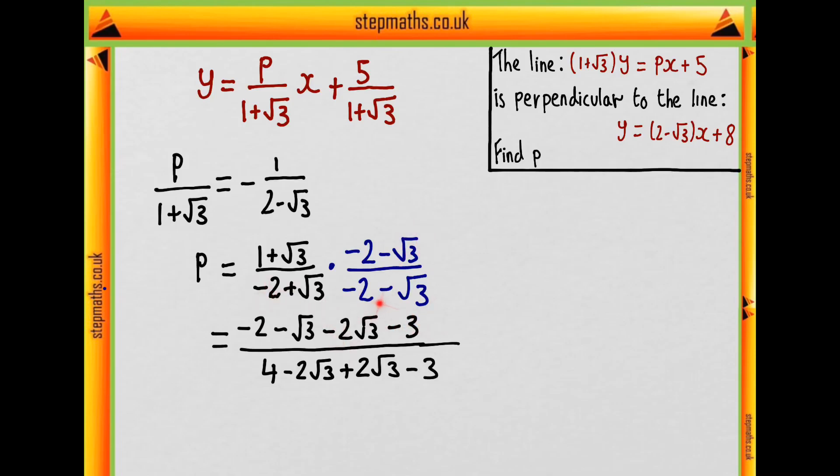Now on the bottom, minus 2 times minus 2 is 4. Then we have minus 2 root 3 and then minus 2 times minus root 3 so plus 2 root 3. So they just cancel which is nice and we get minus 3 as well from the root 3 times minus root 3.